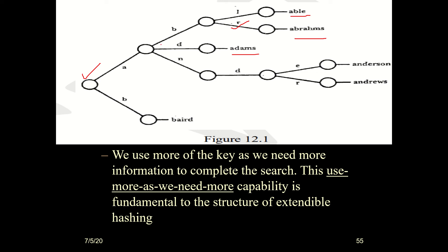For Adams, we go A, D, then Adams. For Andrew and Anderson, the path starts A, N, D — then E for Anderson, and R, E, W for Andrew. For Bade, it is simply B, A, D, E. This is how the trie tree is built using alphabets — we only use branches as needed.